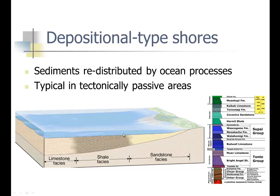Depositional type shores show sediments where, close to the shore, we have sand. As we go out, the particles get smaller and smaller because the energy in the water gets smaller. Then we get shale where silt falls down. When all the particles go out, calcium carbonate from sea creatures collects on the ground. So we have limestone facies, shale facies, and sandstone facies.